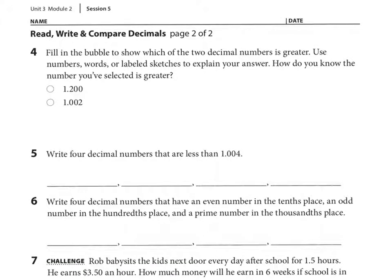Number 4 says fill in the bubble to show which of the two decimal numbers is greater. Use numbers, words, or labeled sketches to explain your answer. So which number is greater? Let's see, both numbers have 1 in the ones place. Look in the tenths place, 1 has 0 and 1 has 2. So the one that would be greater is the one with the higher number in the tenths place. Therefore, the answer is 1.200 thousandths.